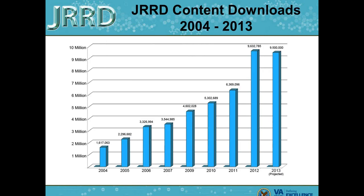This graph illustrates JRRD content downloads from 2004 through 2013. We're continuing to increase our downloads from year to year while marching towards 10 million. Last year at this time, we projected finishing 2012 with 7.4 million downloads, and I'm happy to report we finished the year with over 9.6 million. This large increase is partly due to a spike in traffic in May and June. Based on current trends, we are estimating to finish 2013 with 9.5 million downloads. Note there is no data for 2008 because JRRD was offline.